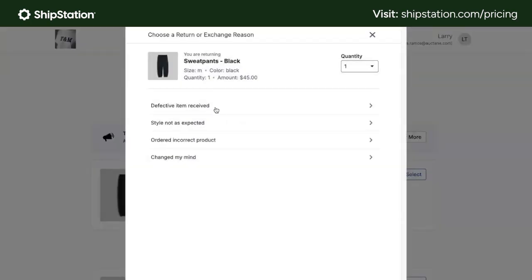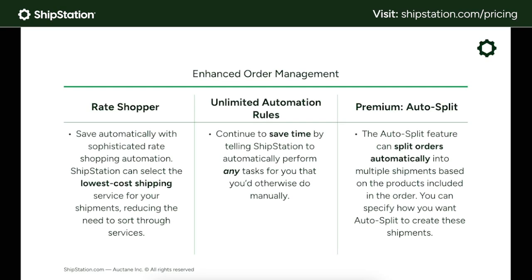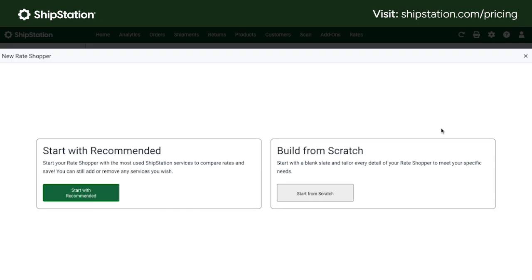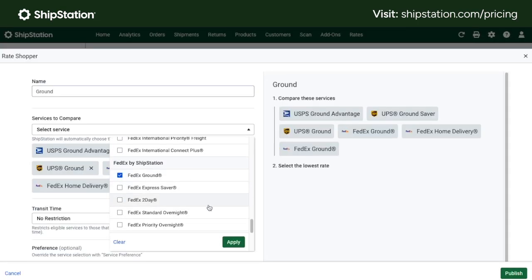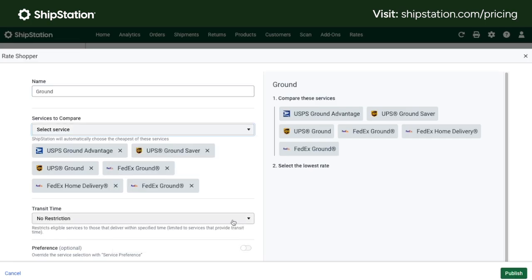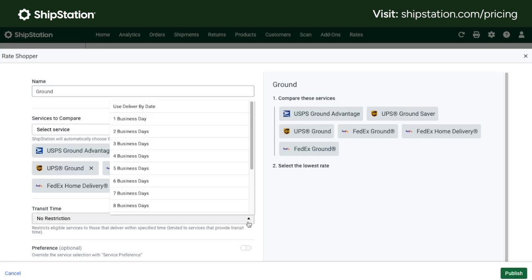We've enhanced our rate shopping automation to help you save even more money. The rate shopper feature is available on the standard and premium plans and allows you to save automatically and avoid having to manually browse for rates. With this feature, you can pre-define which services you'd like ShipStation to compare, allowing you to access your negotiated carrier rates, define any delivery time or service requirements, and then automatically find the best shipping options — saving you time and money on every single order.